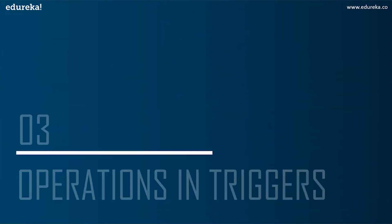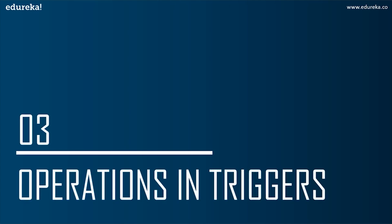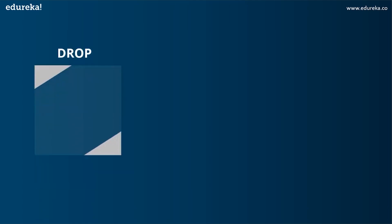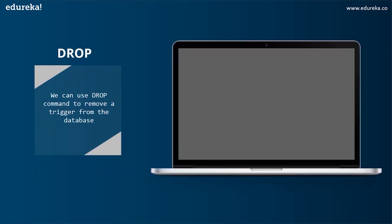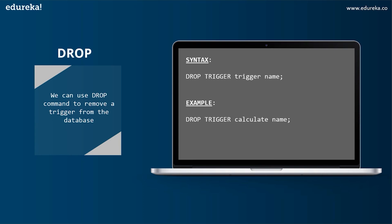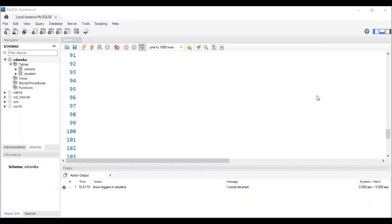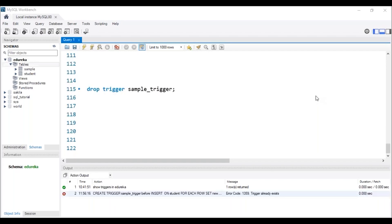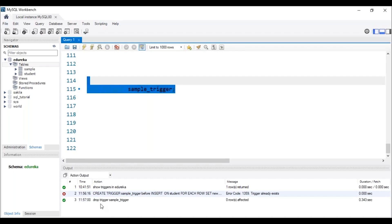Let's now implement an example of a trigger in SQL. The next topic is operations in triggers. We can perform many operations using triggers — some simple, some more complex. The first operation is DROP. We can use the DROP command to remove a trigger from the database, and the syntax is: DROP TRIGGER trigger_name. Heading to MySQL Workbench — to drop a trigger, the trigger has to be present in the database. After executing this query, we can see in the status bar that the trigger with the name 'sample_trigger' has been dropped.